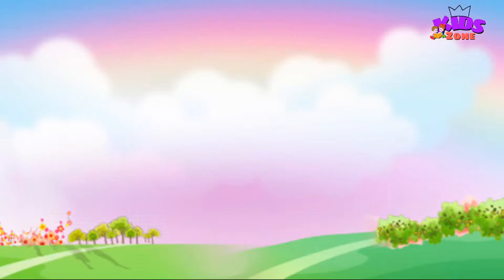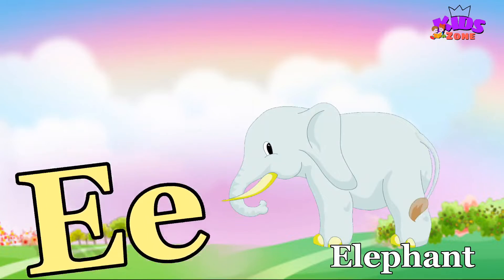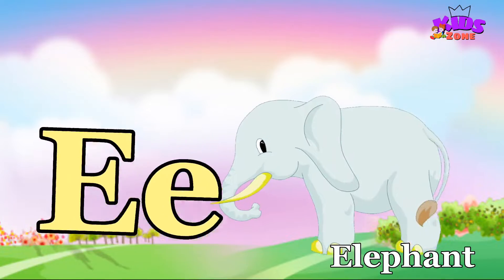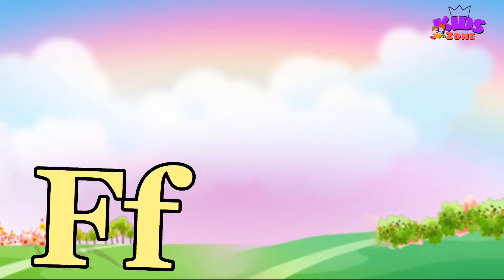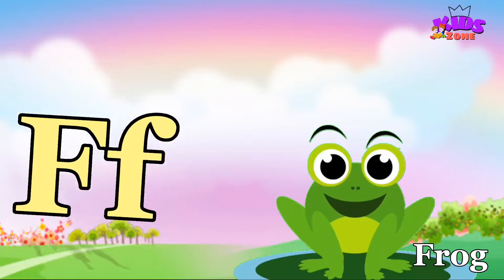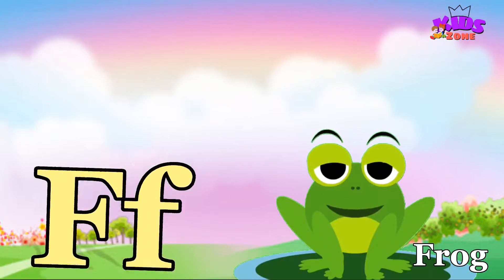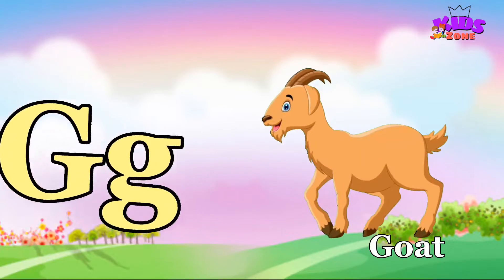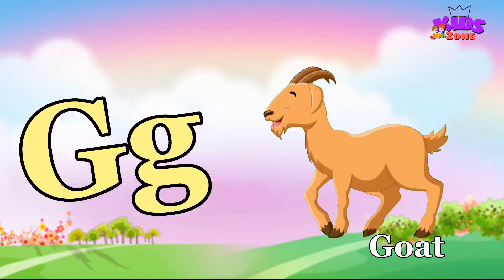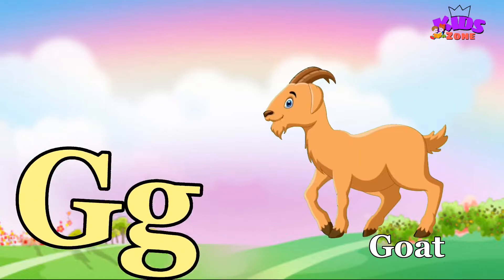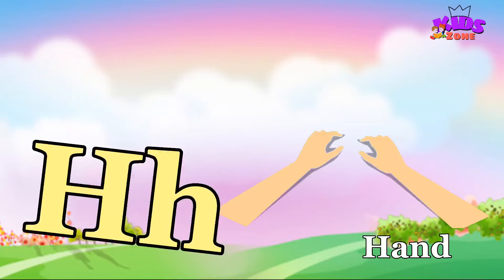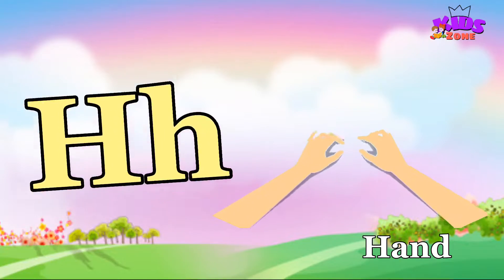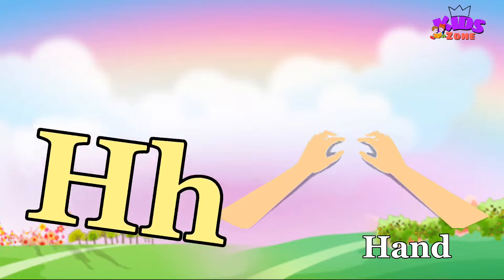E is for Elephant, E-E-Elephant. F is for Frog, F-F-Frog. G is for Goat, G-G-Goat. H is for Hand, H-H-Hand.